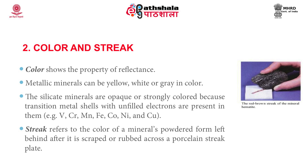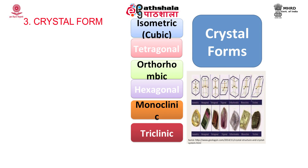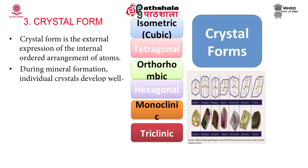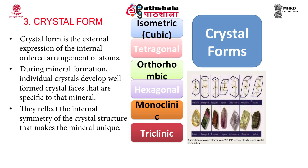The next property is crystal form. Crystal form can be isometric, tetragonal, orthorhombic, hexagonal, monoclinic or triclinic. Crystal form is the external expression of the internal ordered arrangement of atoms. During mineral formation, individual crystals develop well-formed crystal faces that are specific to that mineral, reflecting the internal symmetry of crystal structure that makes the mineral unique.